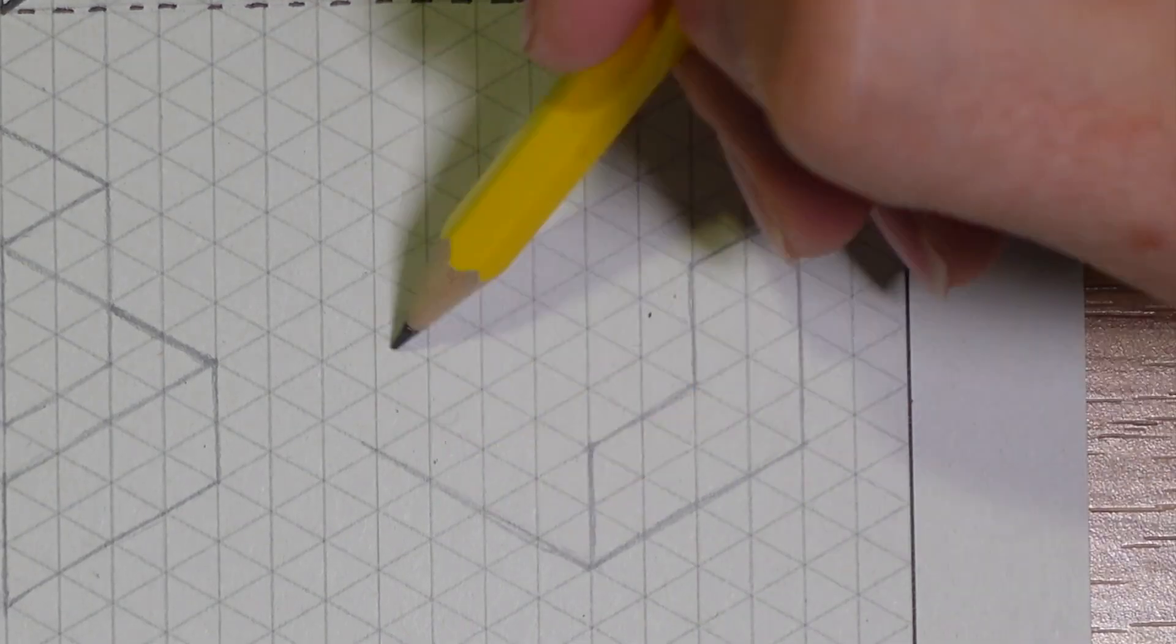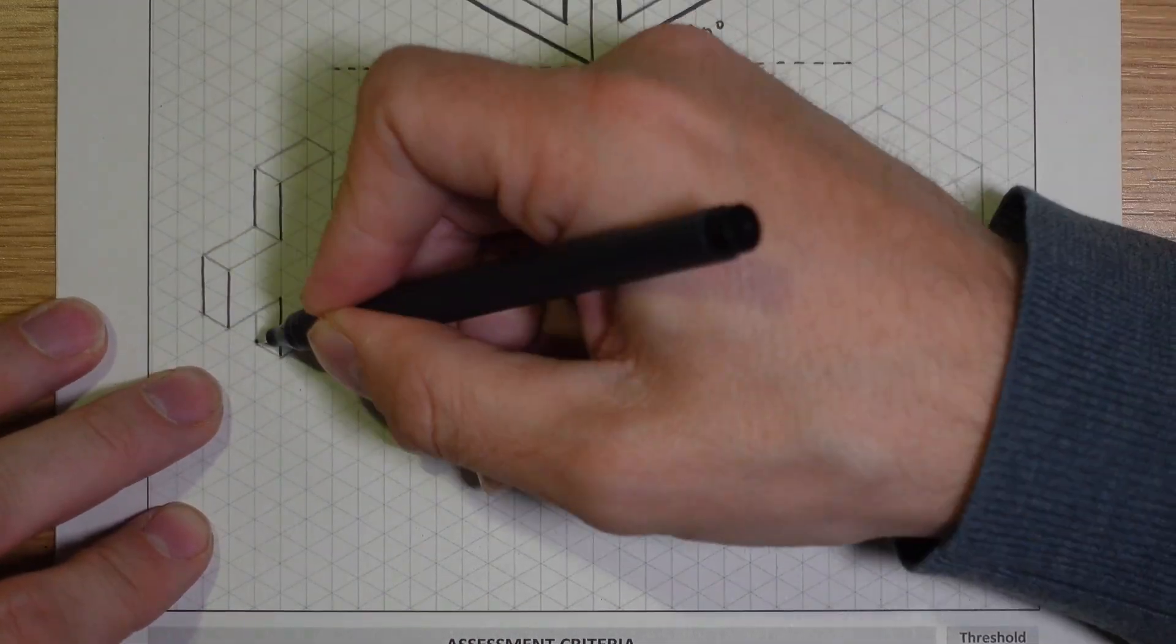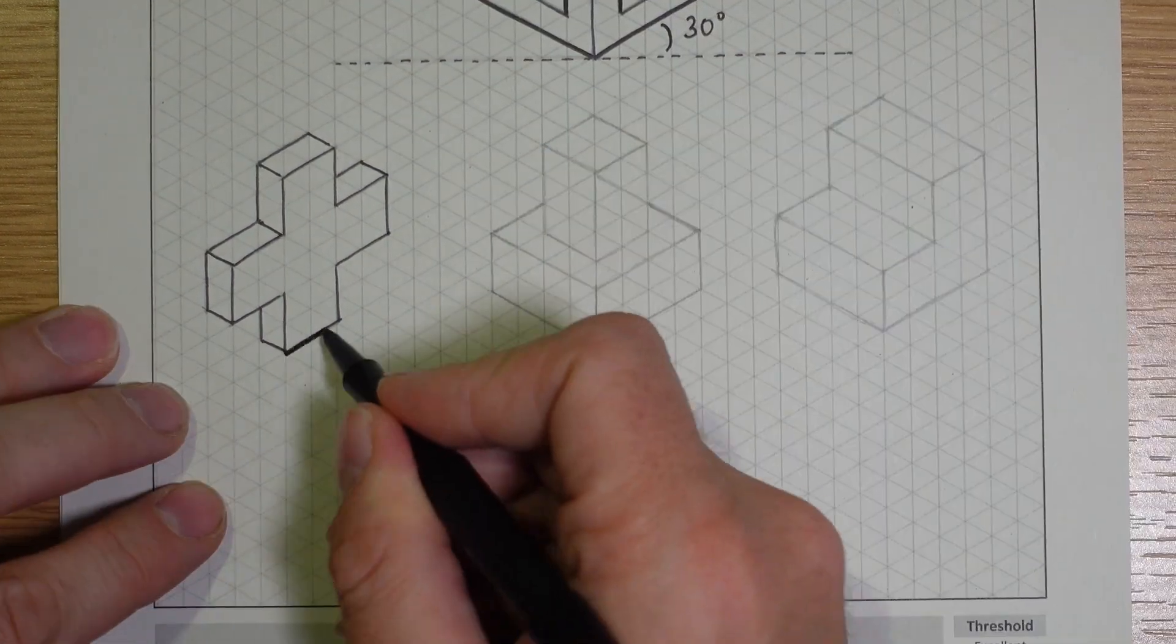They then get confused and begin to make mistakes. Drawing one face at a time is best, and even one line at a time, thinking about the length of the line as well as the direction.